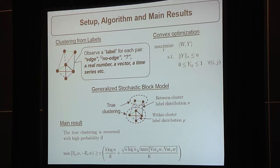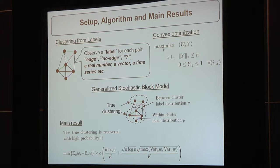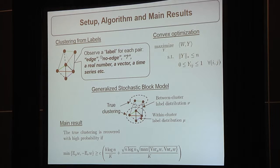We propose a graph clustering setting where the pairwise observation is in the form of a label — an element of a label set which can be very general: discrete or continuous, or even a time series. Our algorithm involves solving a convex optimization problem with an appropriately weighted objective function based on the observed labels. To evaluate performance, we use a generalized stochastic block model where we assume a true but unknown underlying clustering and a generative model for the observations. Our main theoretical results provide sufficient conditions for the exact recovery of this underlying clustering with high probability.